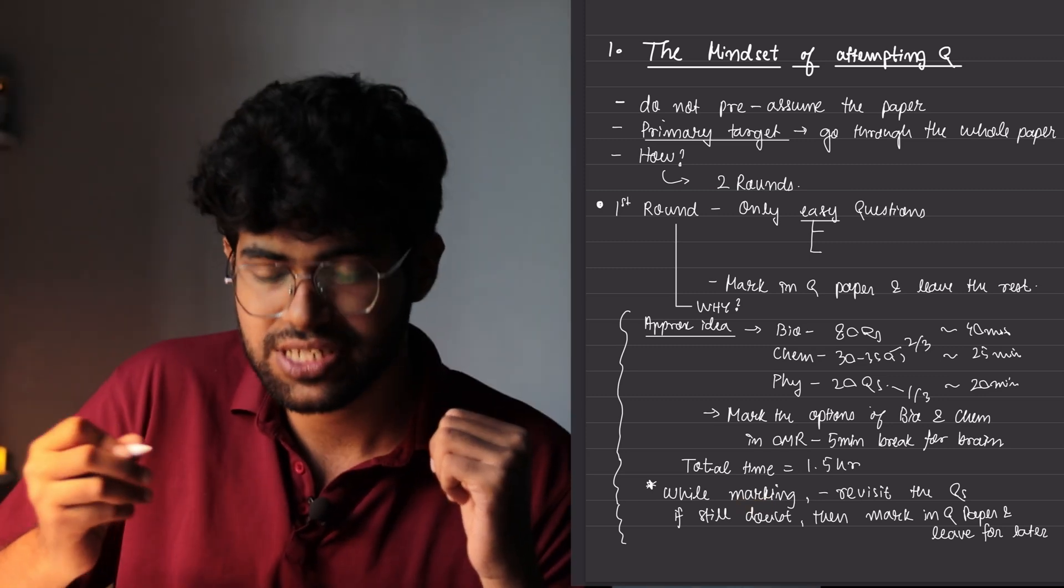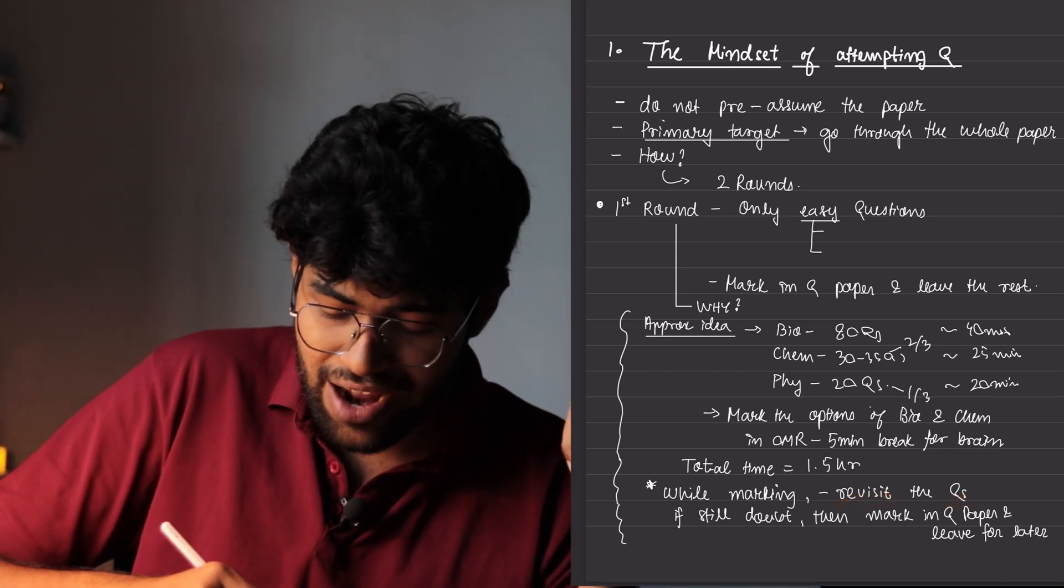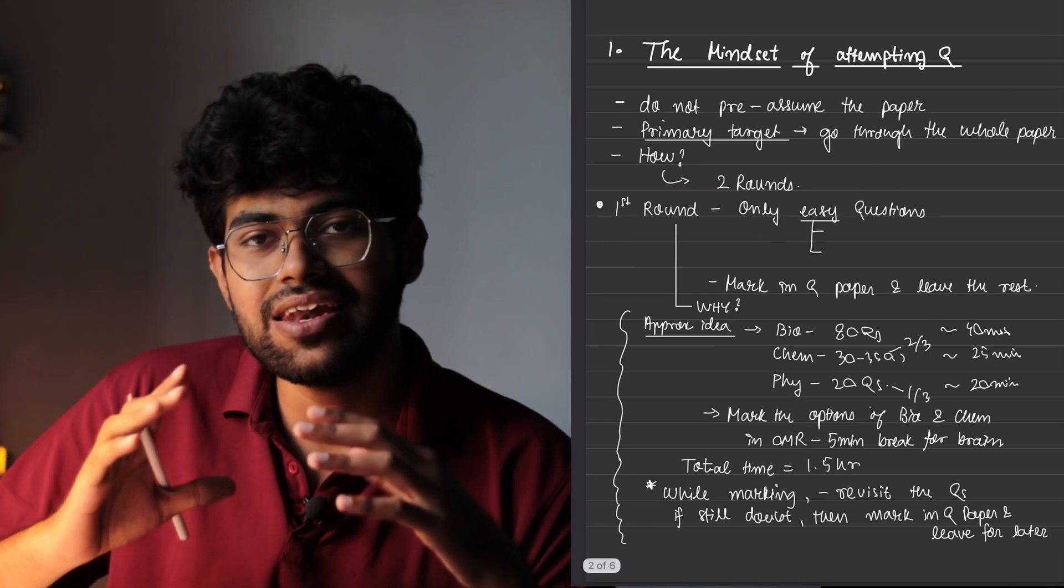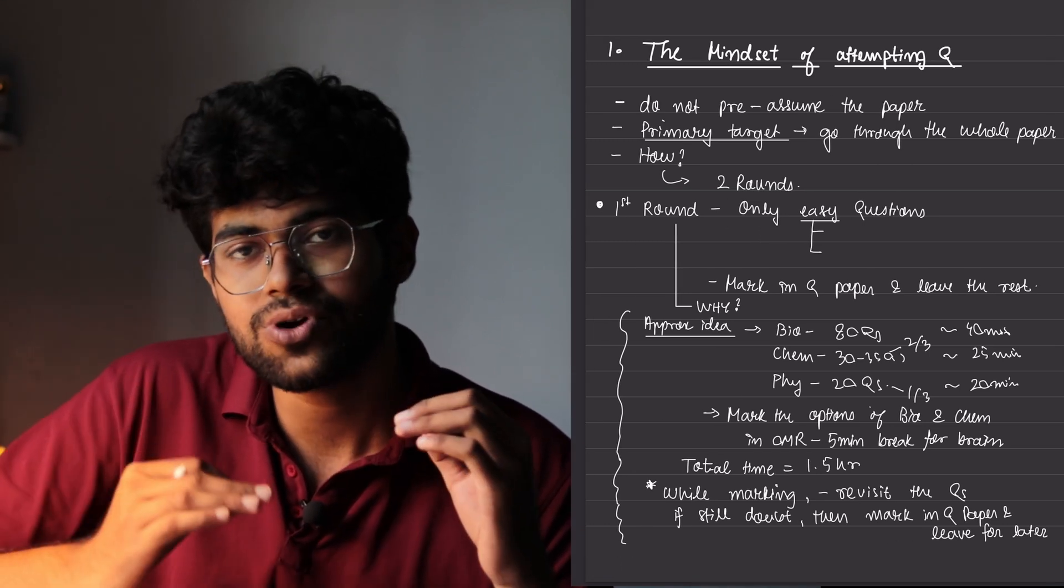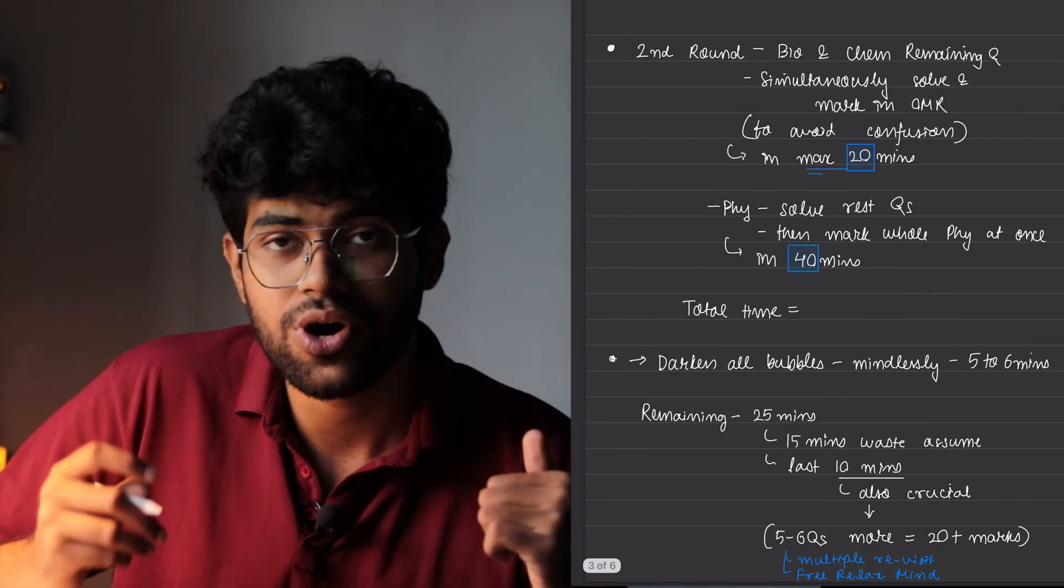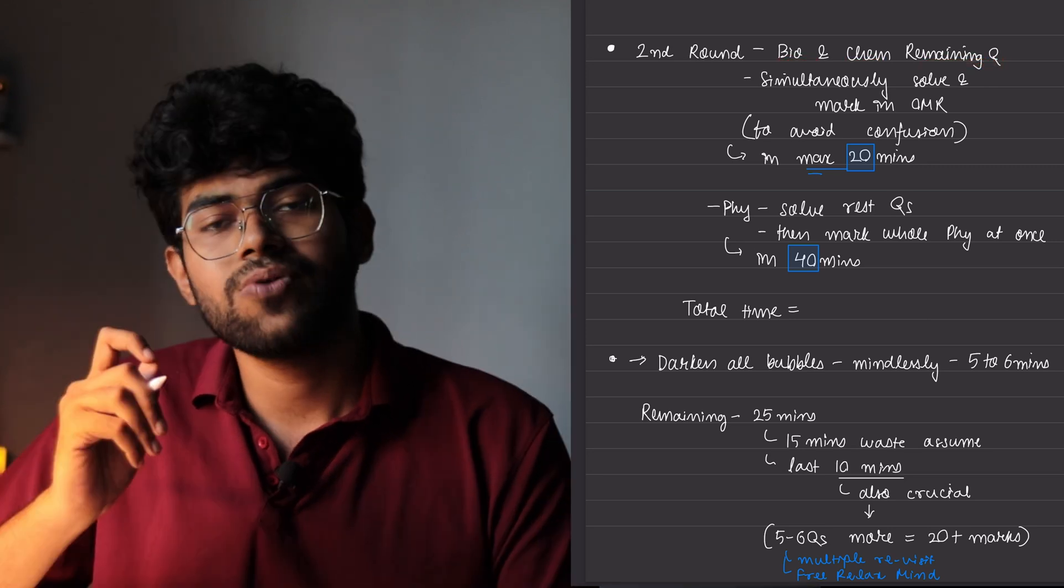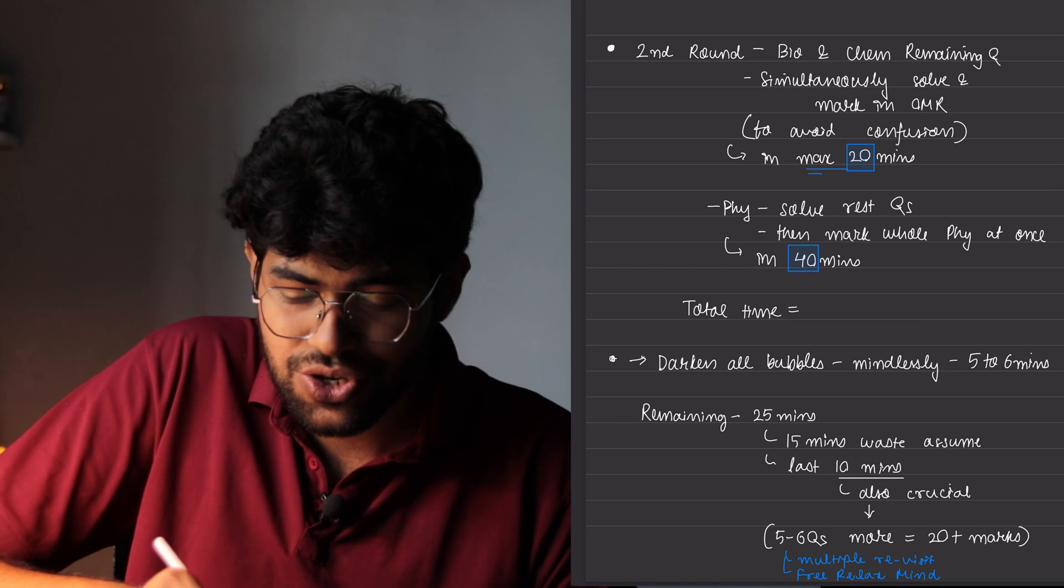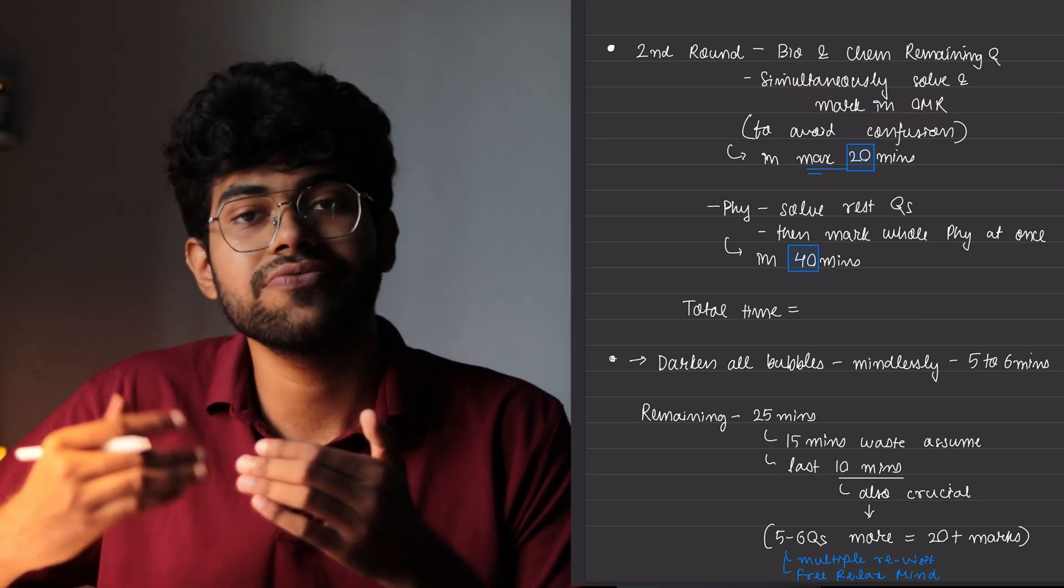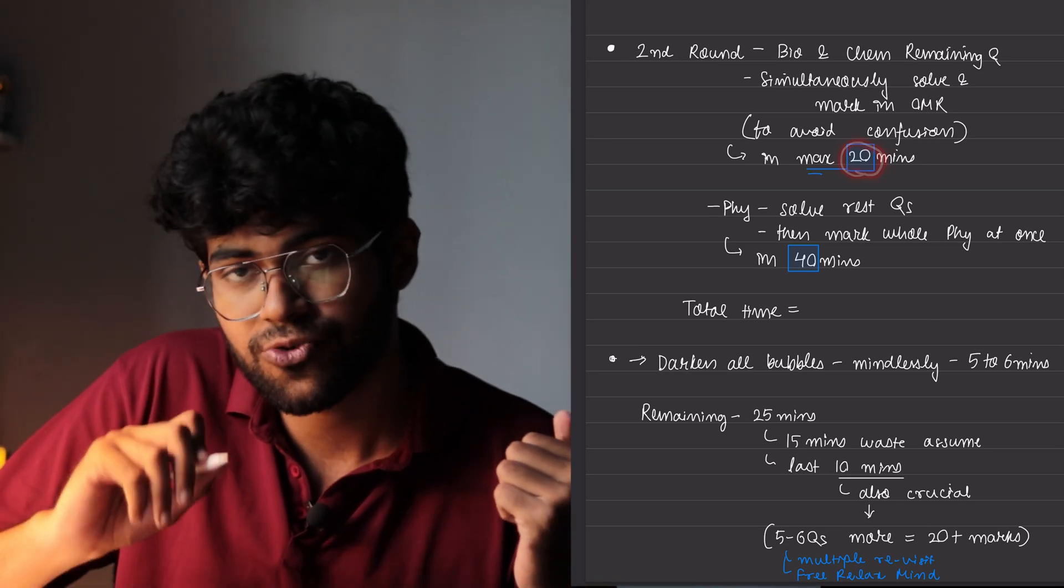So after round one, while marking the options in the OMR sheet, revisit the questions that you have attempted but you have marked. If you still have doubt in them, then mark it properly in the question paper and leave it for later. I will properly say how to mark and how to categorize the questions so that you don't have a confusion later. Now moving on to round two, what you should do in round two is firstly, do the biology and chemistry, the remaining questions. While you are solving the questions simultaneously, you should mark in the OMR sheet because if you don't simultaneously mark, then you will get confused later of what questions you have marked and what questions you have left. And this should be done in a maximum of 20 minutes.